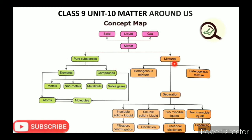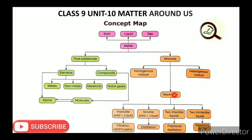Compounds are combined by a physical method in definite proportions. Mixtures are classified into 2 types: homogeneous and heterogeneous. Homogeneous mixtures are uniform throughout, while heterogeneous mixtures have different compositions in different parts.